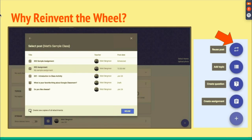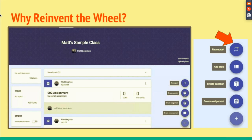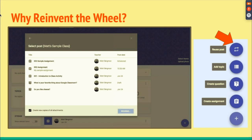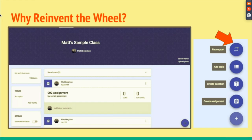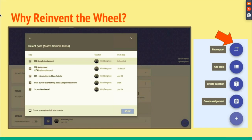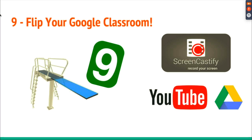Why reinvent the wheel? If you have an assignment you really enjoy giving — like current event assignments — you can reuse a post from any one of your classes and share it with another class as well. That's a great way of saving yourself time.